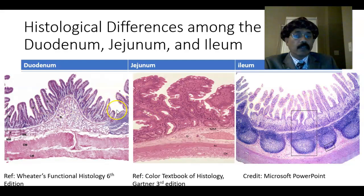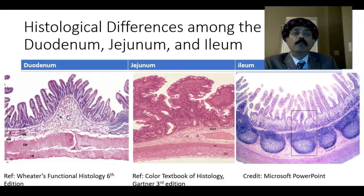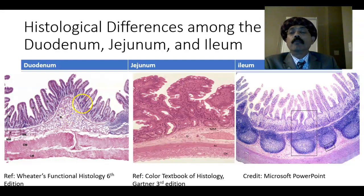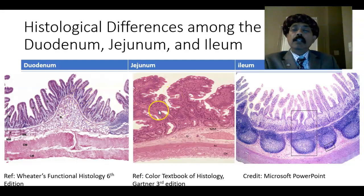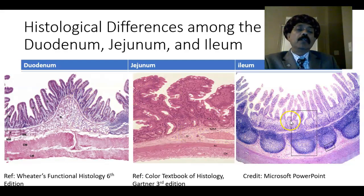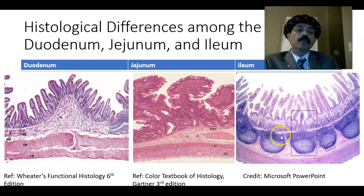These are the differences: we have the Brunner's glands, which are mucus glands whose secretion is alkaline, and they also secrete a hormone called urogastrone. The submucosal gland is absent in the jejunum, but in the lamina propria of the ileum, and partly the submucosa, we have the lymphatic nodules — we call them Peyer's patches.